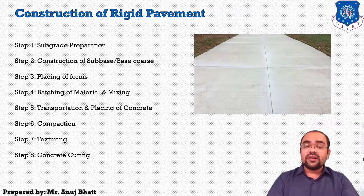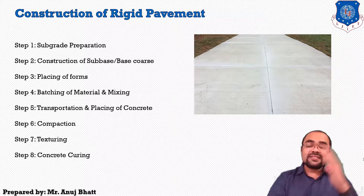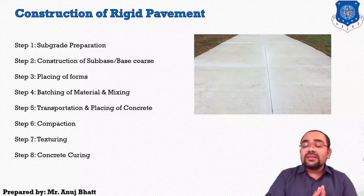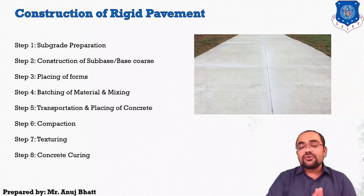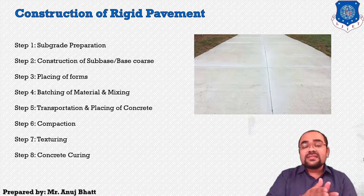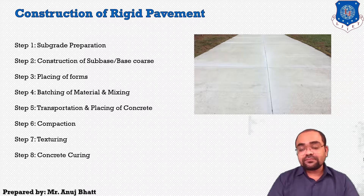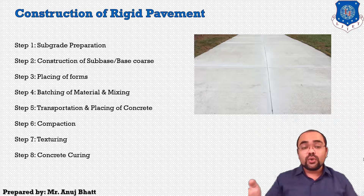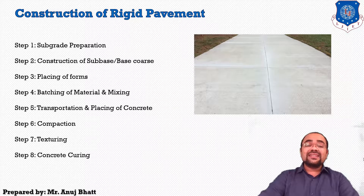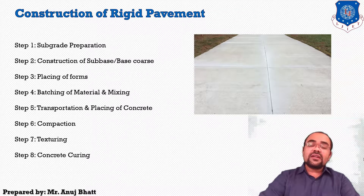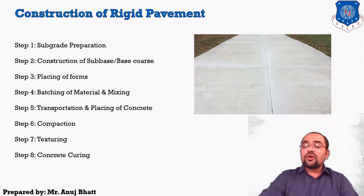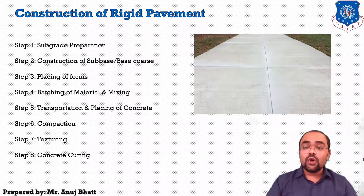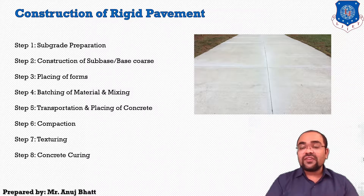Only if we find it necessary to provide the subbase course, then we will provide it. Otherwise, we provide subbase or base course as a single layer. The next step is placing formwork beside the road. Step 4 is batching of material and mixing. Step 5 is transportation and placing of concrete on the site, followed by compaction. After compaction, texturing is performed, and after texturing, the road is kept for curing. After curing, you can allow traffic on that road.